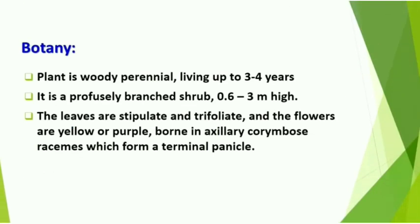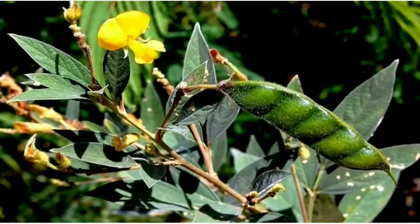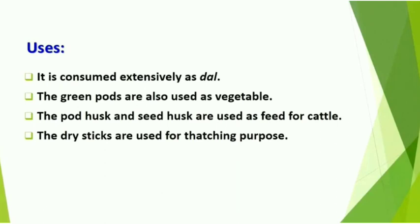Some plant characters: it is a woody perennial living up to three to four years, but usually removed within one year. The shrub grows up to 0.6 to 3 meters in height. The leaves are stipulate and trifoliate. The flowers are yellow to purple, borne in axillary corymbs and racemes which form a terminal panicle. You can see the plant, flower, and fruit characters in the picture.